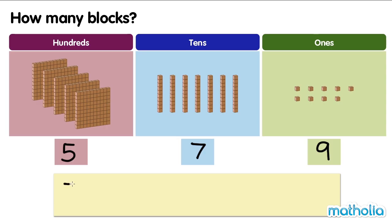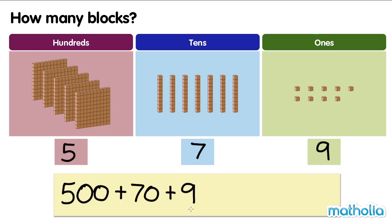The digit in the hundreds place has a value of 500. The digit in the tens place has a value of 70. And the digit in the ones place has a value of 9. 500 plus 70 plus 9 equals 579. There are 579 blocks altogether.